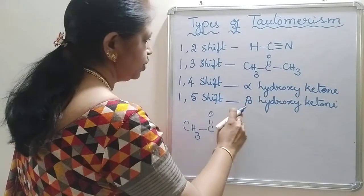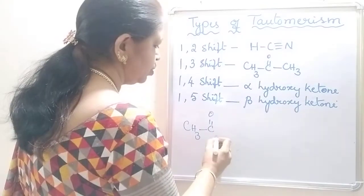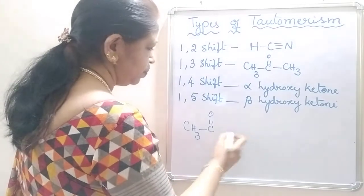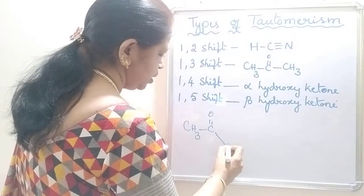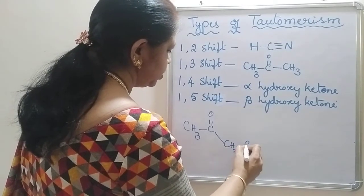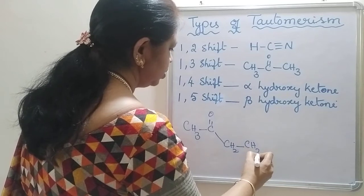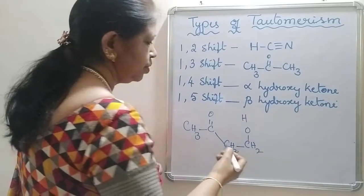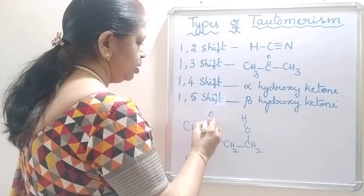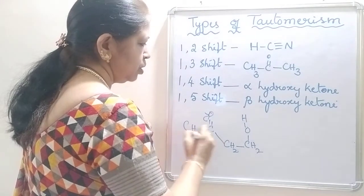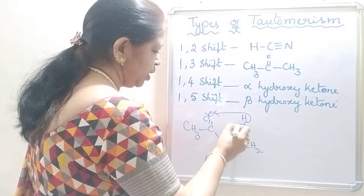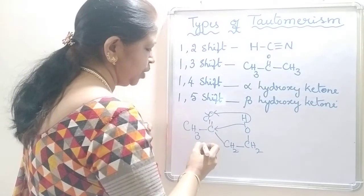C double bond O, here we have to take a beta hydroxy ketone. We have to increase one carbon atom between the hydroxyl group and carbonyl carbon, CH2-CH2-OH. The mechanism is same as in the earlier case. Bonded pair moves towards the oxygen, proton moves towards the oxygen and the sigma bonded pair moves towards the carbonyl carbon.